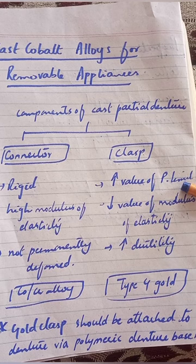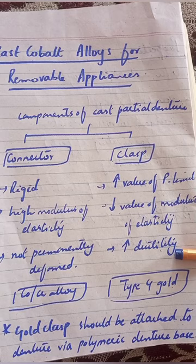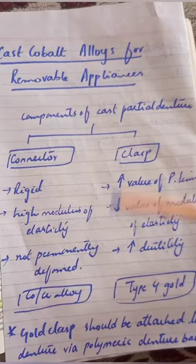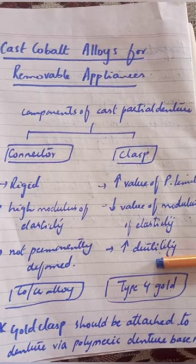For the clasp of a partial denture, the metal needs different properties: the proportional limit value should be smaller, the modulus of elasticity should be smaller, and ductility should be adequate. So for the clasp, we use Type 4 gold alloy. In summary: the connector uses base metal (cobalt-chromium), and the clasp uses gold alloy.